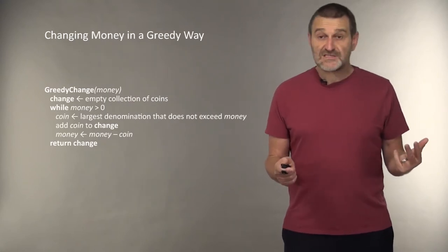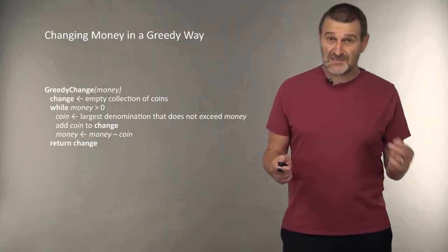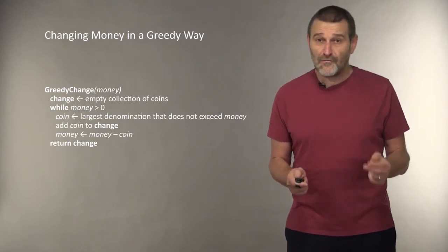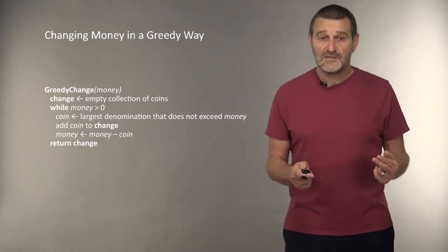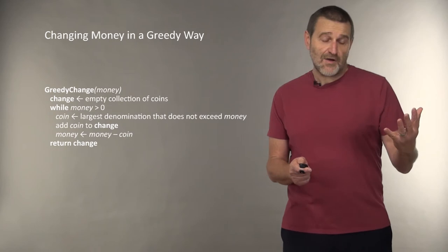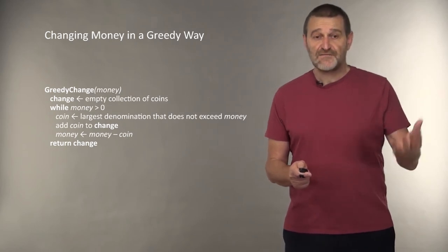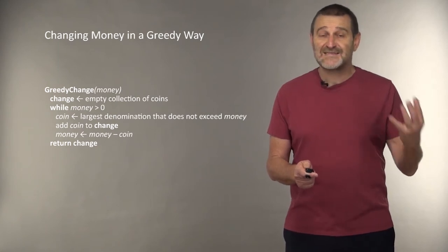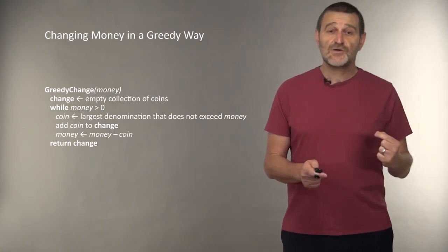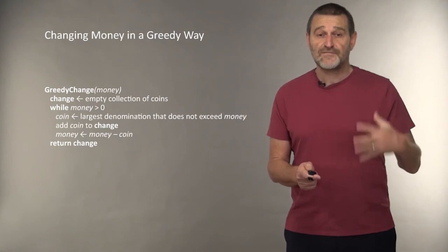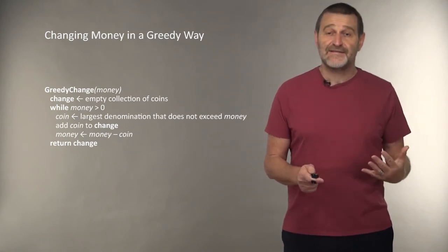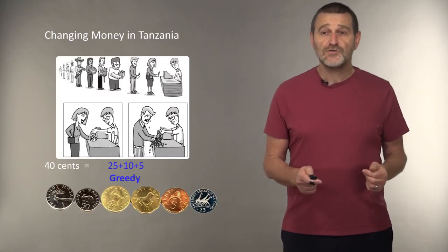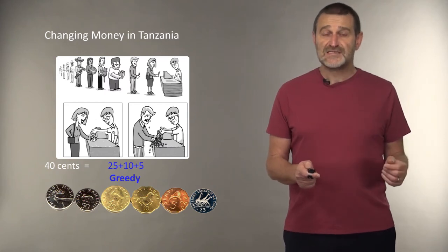And the first thing that comes to mind is actually the approach that cashiers all over the world use. They simply look at the amount of money they have to change and they find the maximum denomination, maximum coin that doesn't exceed the money. They give you this coin, subtract this coin from the amount of money, and iterate. Do you think this approach would produce an optimal solution?